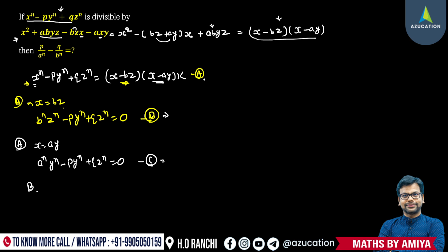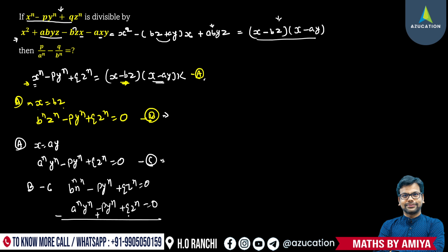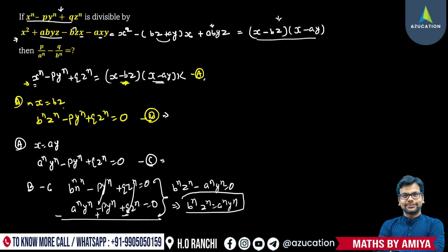So we have Expression B and Expression C. Now we have to do B minus C. We have bⁿzⁿ minus pYⁿ plus qZⁿ equals 0, and we subtract Expression C — sign change, sign change, sign change. The pYⁿ and qZⁿ terms cancel out, so we are left with bⁿzⁿ minus aⁿyⁿ equals 0. From here we could say bⁿzⁿ is equal to aⁿyⁿ.